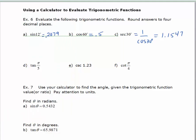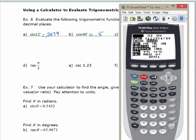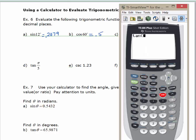Now let's look at the three problems in radians. To evaluate these, we need to put the calculator in radian mode. Hit the mode button and highlight radians instead of degrees, then quit. Now type the tangent of π/4 — hit 2nd then the caret key for π, divided by 4, and hit enter. Rounded to 4 decimal places: 0.7265.